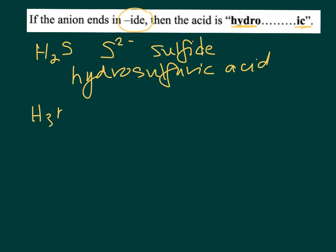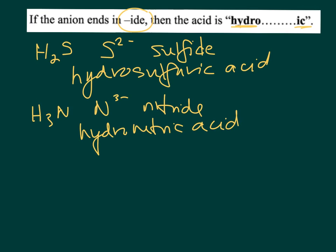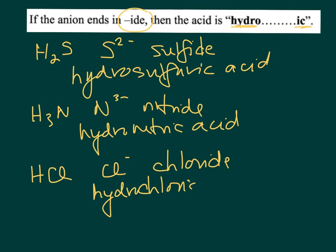H3N, N 3- is nitride, so this becomes hydronitric acid. How about HCl? Cl- is chloride, right, so hydrochloric acid.